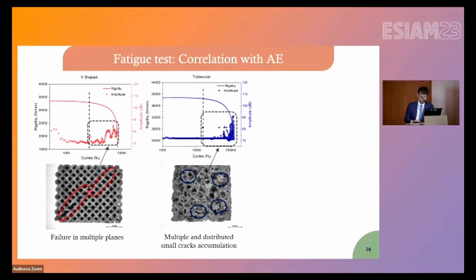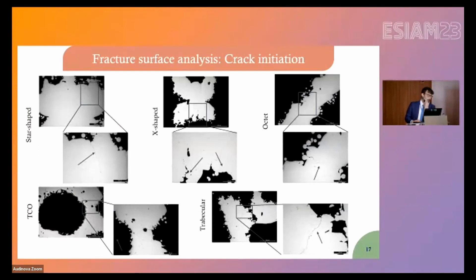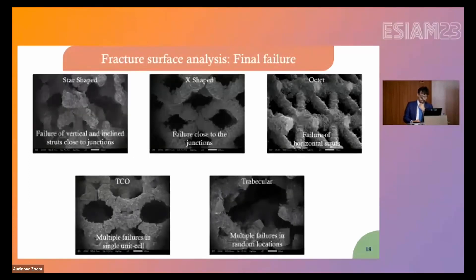Optical micrographs of the critical hot spots show crack nucleation sites and clearly reveal the detrimental effect of manufacturing imperfections on fatigue behavior, further highlighting the importance of achieving high manufacturing accuracy to obtain high fatigue performance in these metamaterials. Fractographic SEM analysis confirmed the critical role of nodes: in the star shape and x-shape, failure was observed close to the junctions, while in the octet truss, preferential failure of horizontal struts was observed.